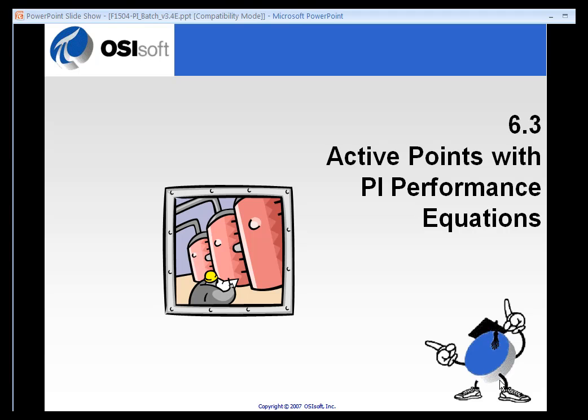They have a combination of different tags or conditions that determine when a batch is supposed to start. And for those people, and that's very common, we have to use some other mechanism to create our active point or trigger tag.